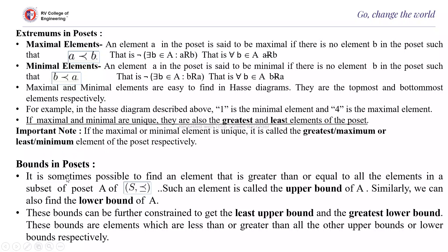Now we will see the bounds in a poset. It is sometimes possible to find an element that is greater than or equal to all elements in a subset A of poset S — such an element is called the upper bound of A. Similarly, a lower bound of A is an element that is less than or equal to all elements in the subset. These bounds can be constrained to get the least upper bound and the greatest lower bound.